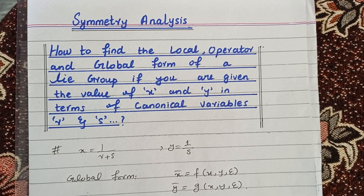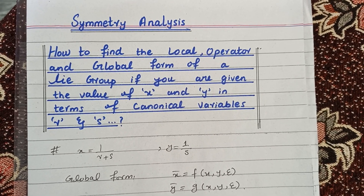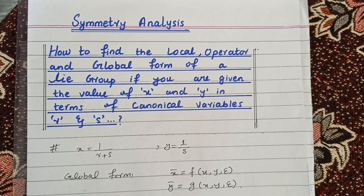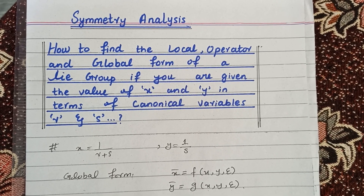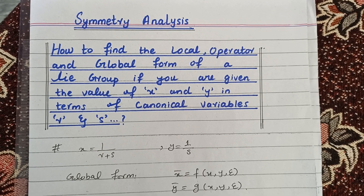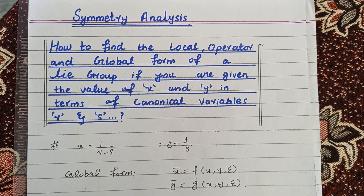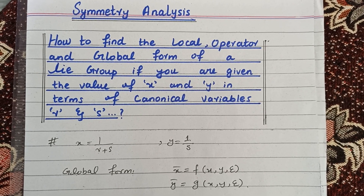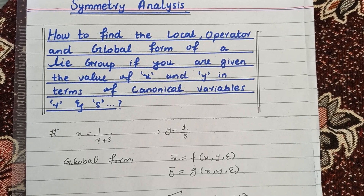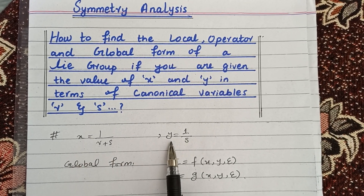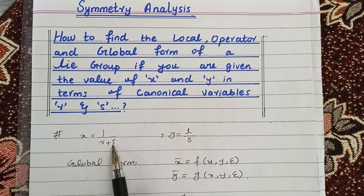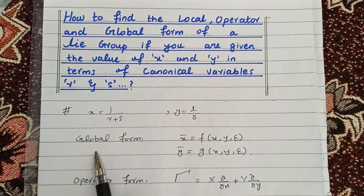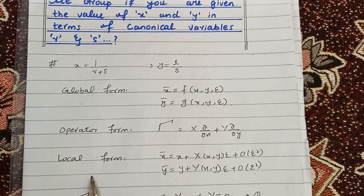Hello everyone. In today's lecture we will discuss a new problem related to symmetry analysis. The problem is how to find the local operator and global form of a Lie group, given the value of x and y in terms of the canonical variables r and s. I have written here the value of x and y in terms of the canonical variables r and s, and we want to find the global form, operator form, and local form of a Lie group.